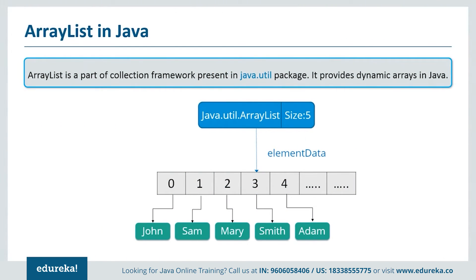Now let's see what is ArrayList. ArrayList is a part of the collection framework and is the implementation of the List interface where elements can be dynamically added or removed from the list. Also, the size of the list is increased dynamically if elements are added more than the initial size, though it may be slower than standard arrays, but can be very helpful in programs where lots of manipulation in the array is required. Some key points: ArrayList is initialized by a size, however the size can increase if the collection grows or shrink if objects are removed from the collection.